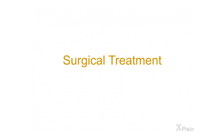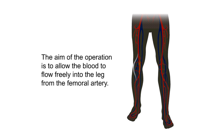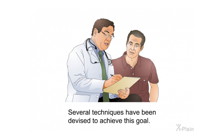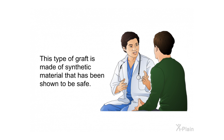Surgical treatment. Depending on your specific operation, one or more incisions may be needed. The aim of the operation is to allow the blood to flow freely into the leg from the femoral artery. Several techniques have been devised to achieve this goal. A tube-like graft made of synthetic material can be placed to connect the femoral artery to the popliteal artery, bypassing the clogged segment. This type of graft is made of synthetic material that has been shown to be safe.